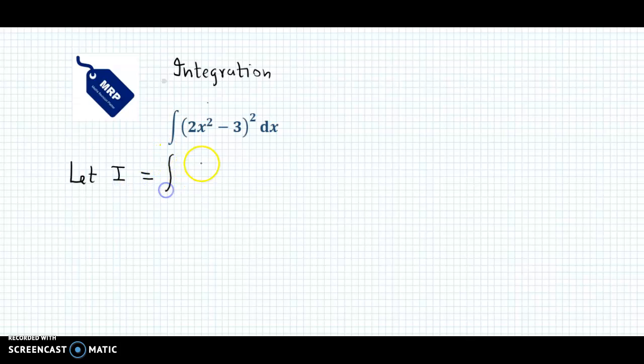So let I = ∫(2x² - 3)² dx. Now before we proceed further, we need to expand this bracket using the formula (a - b)² which is equal to a² - 2ab + b². So applying this formula,